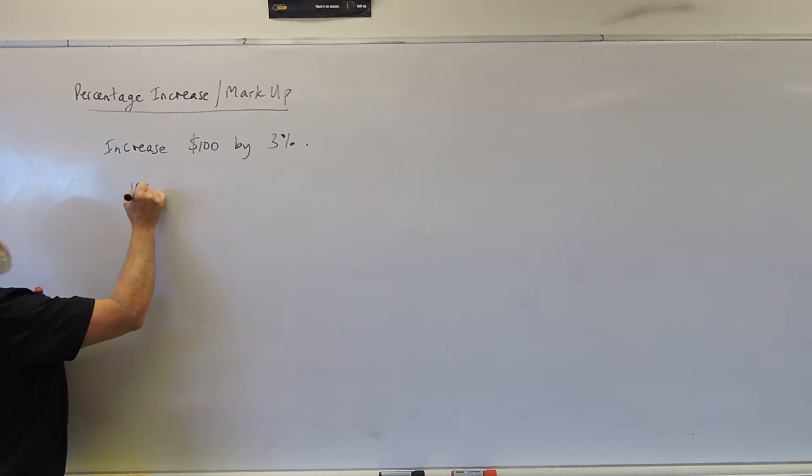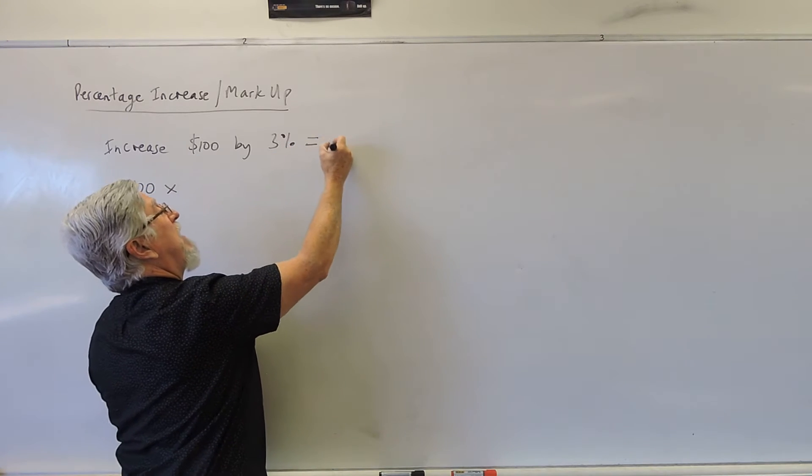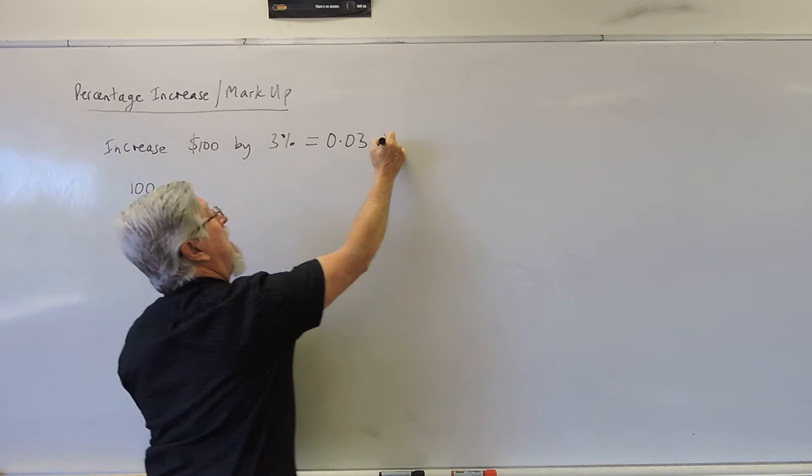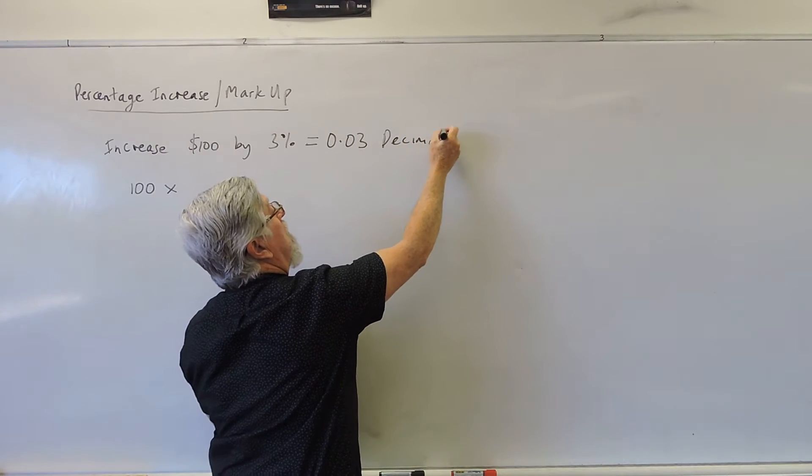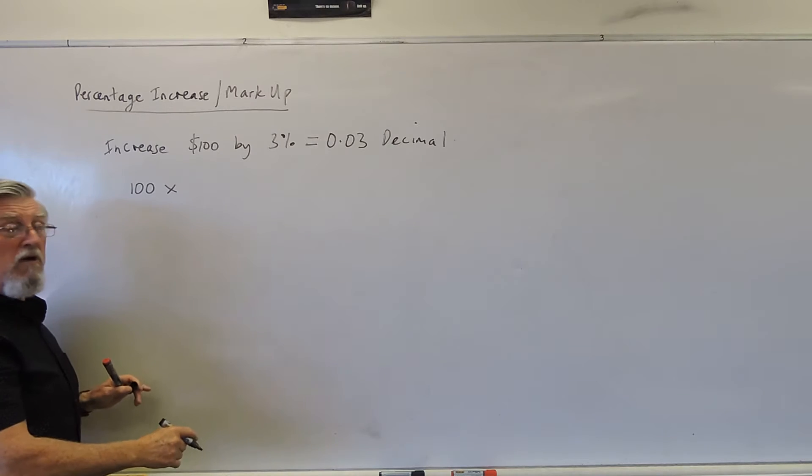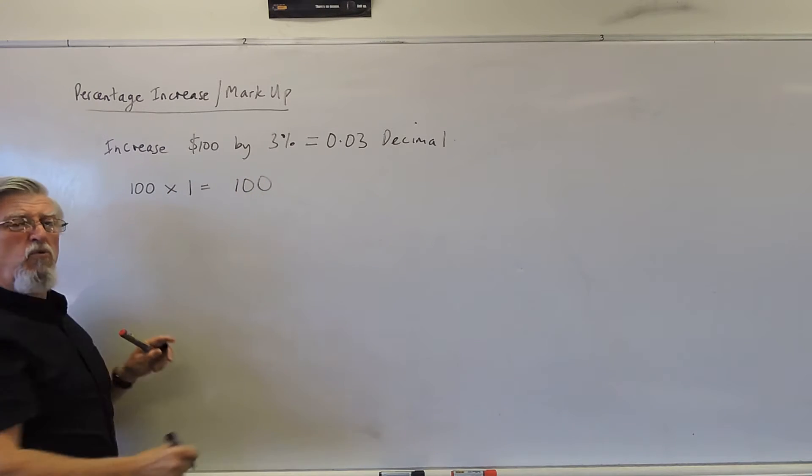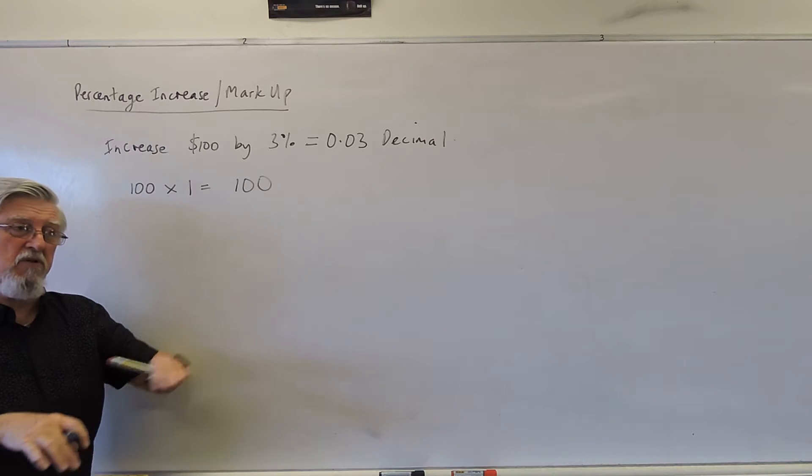So at $100, if I multiply that by this number here, it's actually 0.03 as a decimal. So 3% is 0.03, so what do we do? If I multiply that by 1, I get my hundred and I go to where I was, I stay the same, it doesn't change.